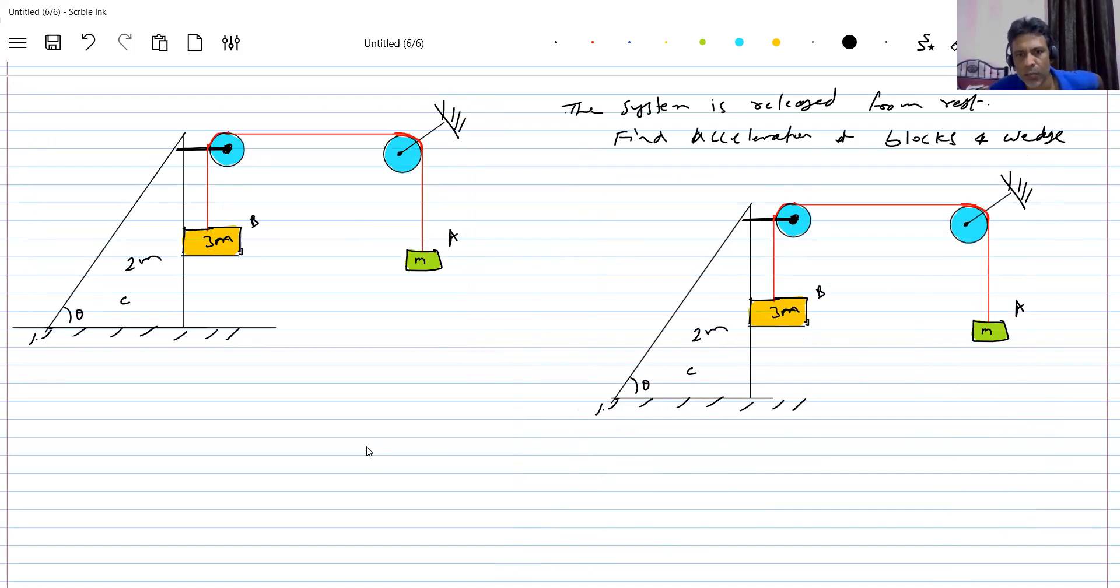And due to that weight, let's see how the blocks will first try to move. Okay, let me start from here. 3mg force will act. String will become taut. This will be tension. All pulleys and strings are massless, they're light. This will be tension. This because of string become taut.